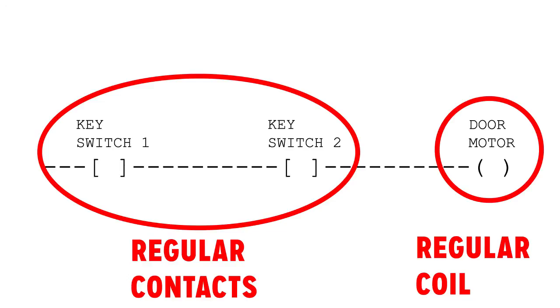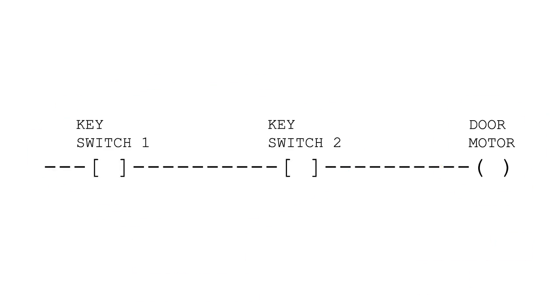A program of this nature could be utilized for physical security within a system. Since keyswitch1 and keyswitch2 are aligned in sequence, both of these conditions must be true in order to engage the door motor. So both switches must make contact in order for the door to open in this scenario.